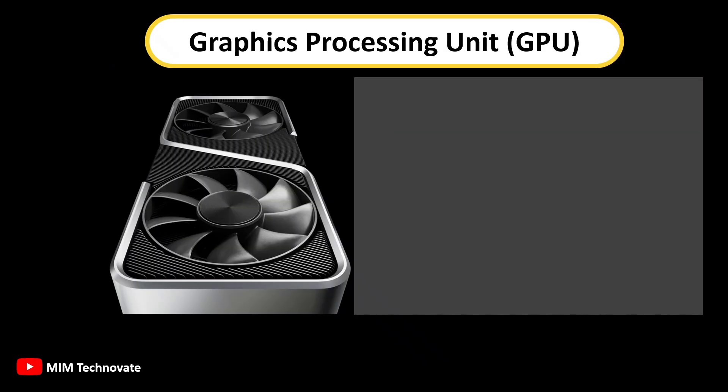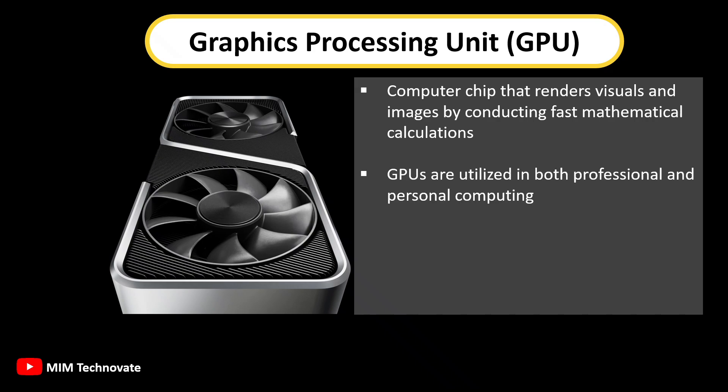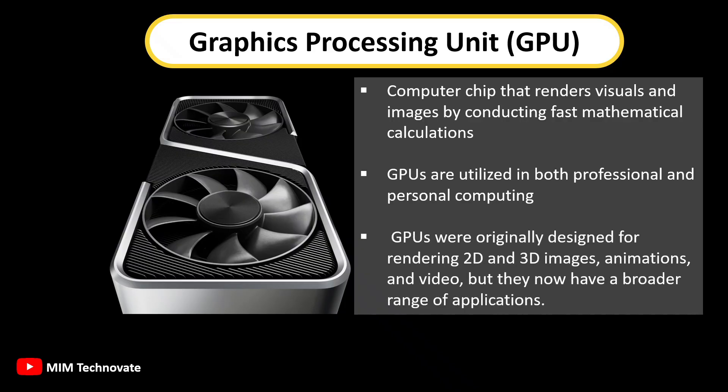What is a Graphics Processing Unit, or GPU? A Graphics Processing Unit is a computer chip that renders visuals and images by conducting fast mathematical calculations. GPUs are utilized in both professional and personal computing. They were originally designed for rendering 2D and 3D images, animations, and video, but now have a broader range of applications.